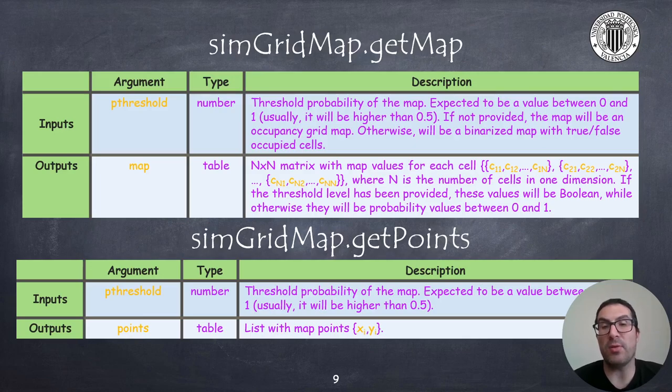If you provide the input argument, the p_threshold input argument, then the return map will be a binarized map. So we use this threshold to binarize and then the values of the table will be values with true or false, being occupied or not occupied.